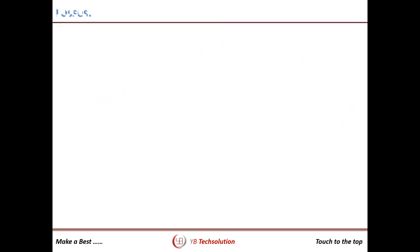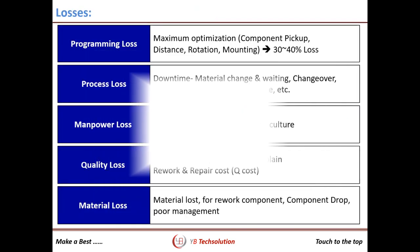In SMT, there are five common losses. First is programming loss, which is around 30 to 40%. Second is process loss, like changeover, machine breakdown, material searching, etc. Third is manpower loss, which is due to absenteeism or slow working. Fourth is quality loss, also referred to as Q cost. And last is material loss.